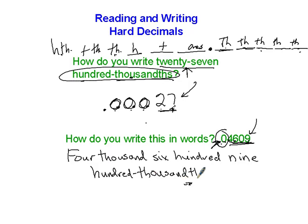Notice I put a T-H right in here, hundred thousandths. Some of these are tricky to spell, so you've got to check what you've written to make sure it's correct. Four thousand six hundred nine hundred-thousandths.